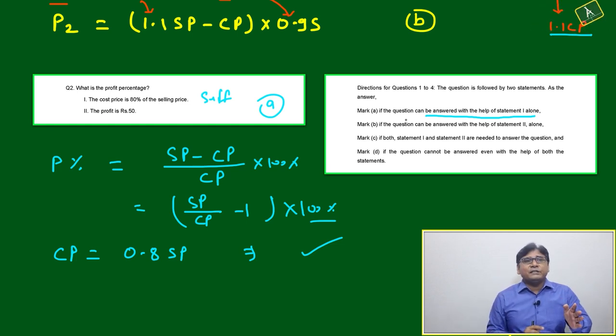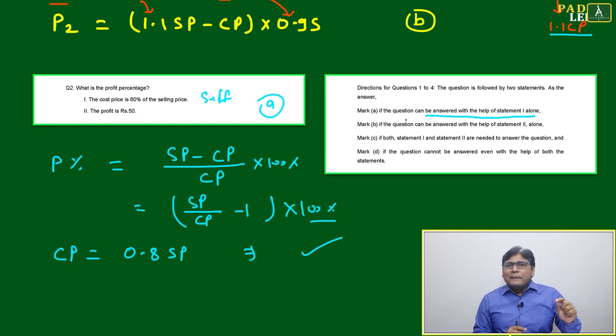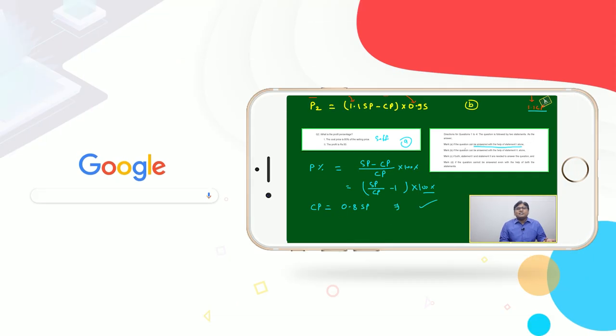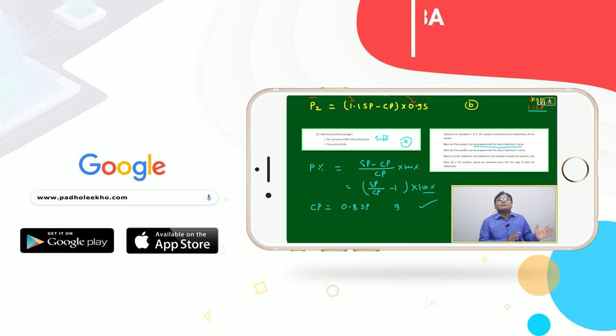If one of the options will be there like 'question can be answered based on statement one or statement two alone,' meaning either of the statement, if that option is there then we have to check statement two also. But here no need to check, we have to mark option A.